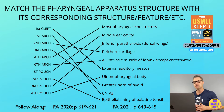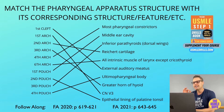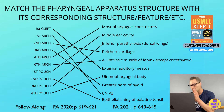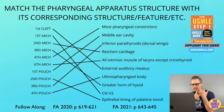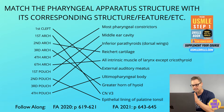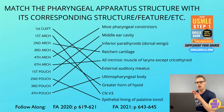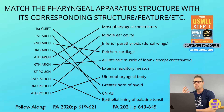The pharyngeal clefts are derived from the ectoderm. Initially we've got four clefts. However, the only permanent structure derived from the clefts — specifically the first cleft — is the external auditory meatus. The second, third, and fourth clefts form temporary cervical sinuses, but those get obliterated by the second pharyngeal arch.